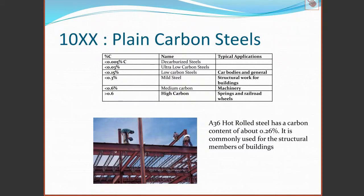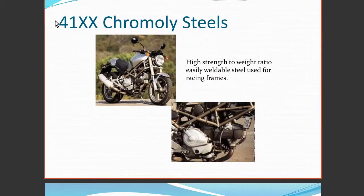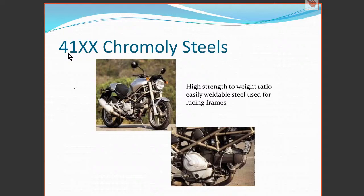High carbon steels are used for springs and railroad wheels, just to name a few applications. Another example of a steel you might commonly find at a metal yard is the 4100 series, sometimes called chrome alloy or chrome-molly steels. These have a distinctive light gray look. They have a high strength-to-weight ratio and are easy to weld, making them useful for building frames that have to be light and strong — for example, the frame of a Ducati motorcycle or frames for certain light aircraft.